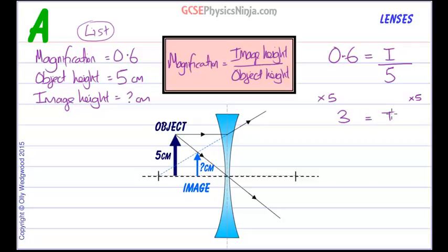Therefore we get 3 equals I. Finally, stating the answer with units: the image height equals 3 centimeters to match our data list.